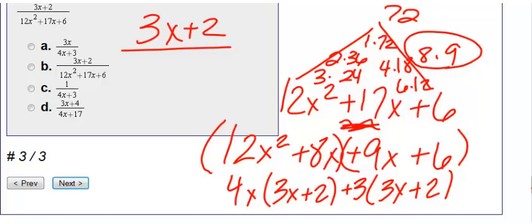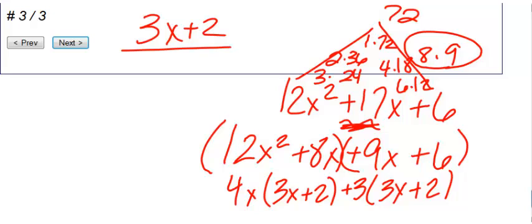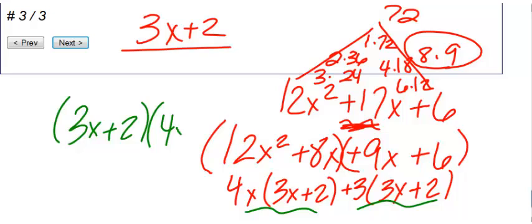And then I can pull out a 3, so I'm left with 3x plus 2. Now they both have 3x plus 2. So now I can factor my 3x plus 2 here. So if I pull out the 3x plus 2, I'm left with 4x plus 3. So that's what's going on the bottom of this fraction.